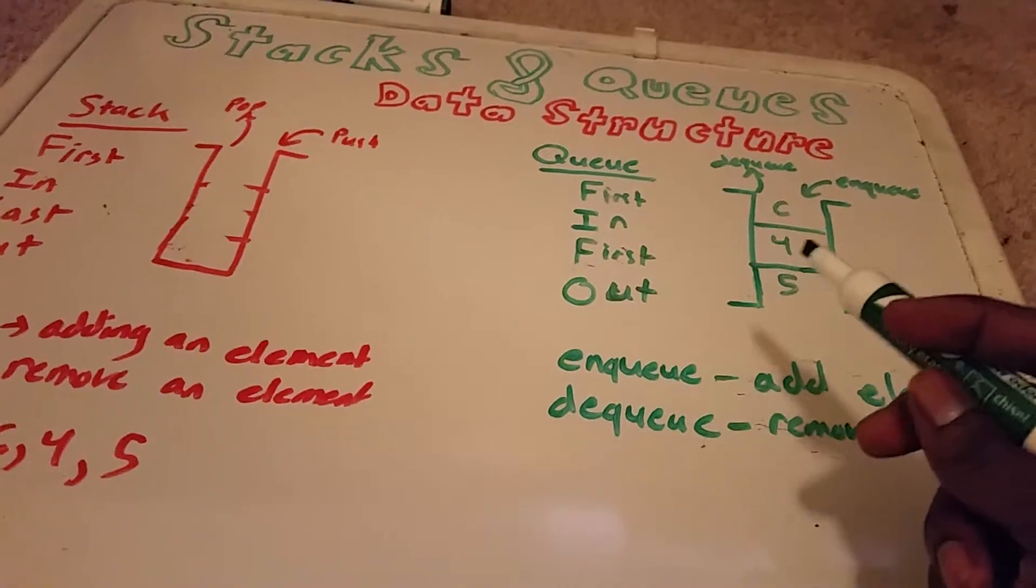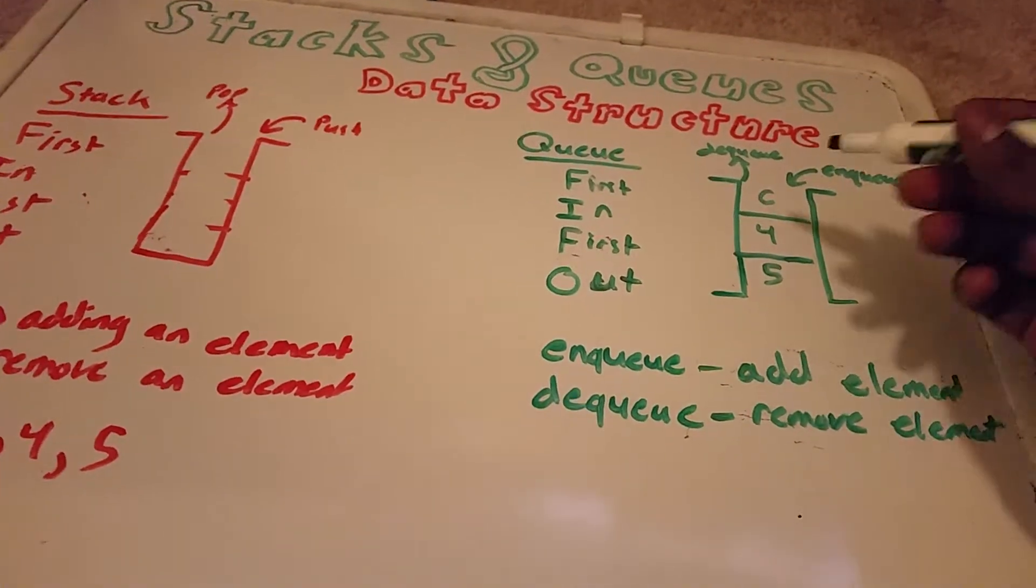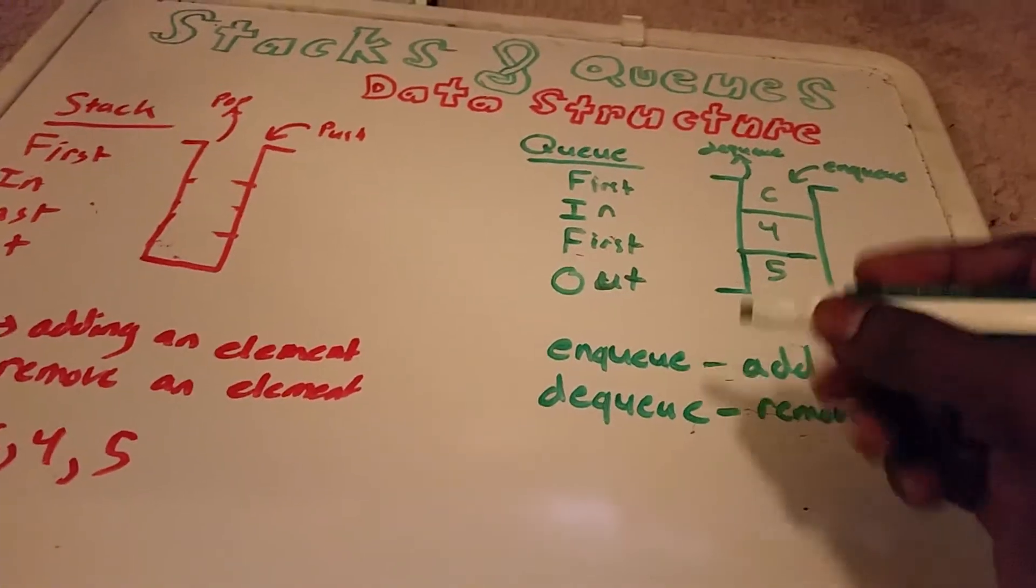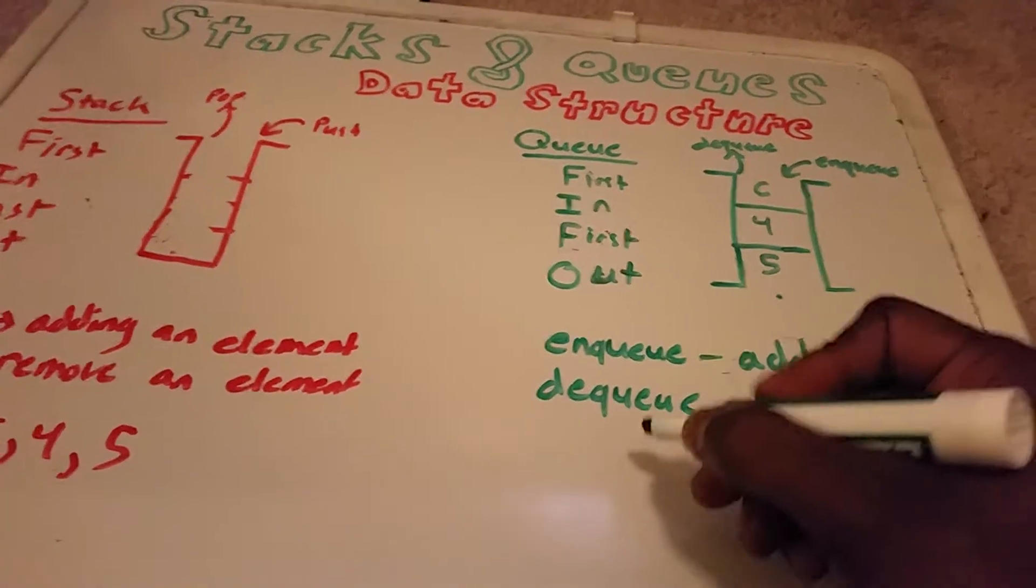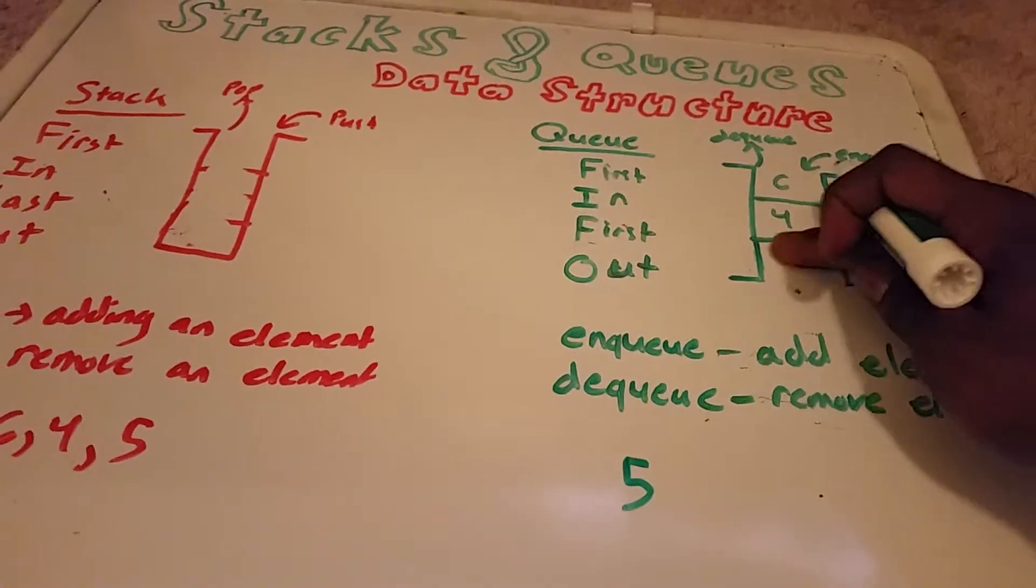So now if I were to dequeue this here, I would dequeue from here, which would be the 5. And then the element will get removed.